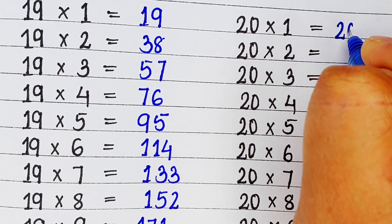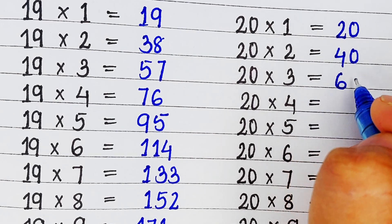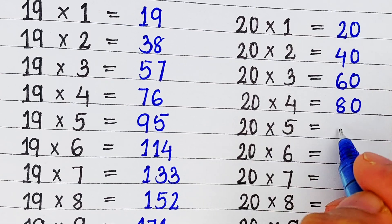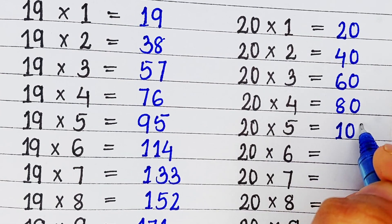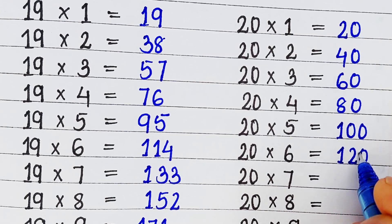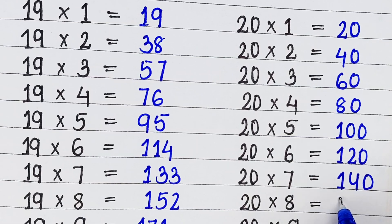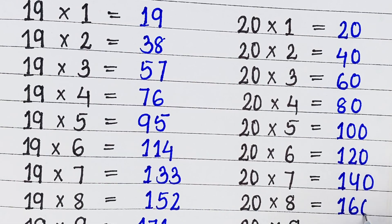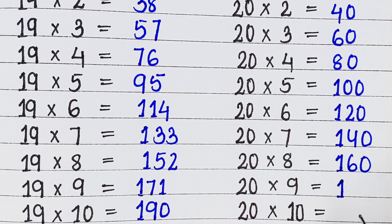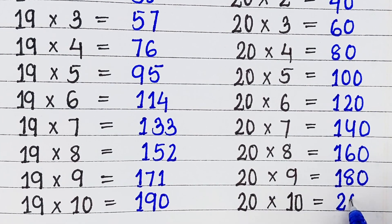Next is table of 20. 20 1s are 20, 20 2s are 40, 20 3s are 60, 20 4s are 80, 20 5s are 100, 20 6s are 120, 20 7s are 140, 20 8s are 160, 20 9s are 180, 20 10s are 200.